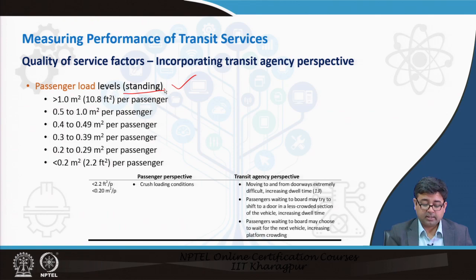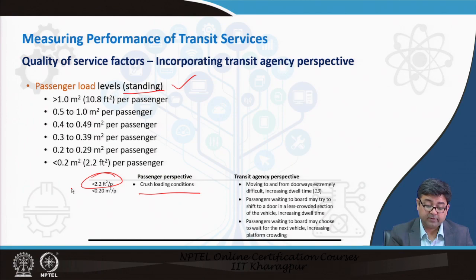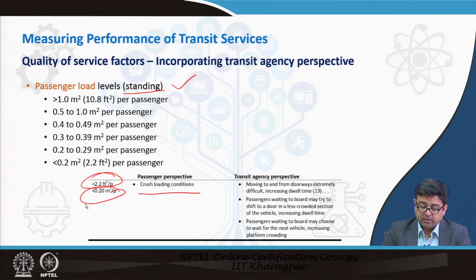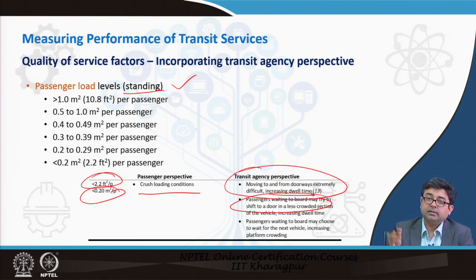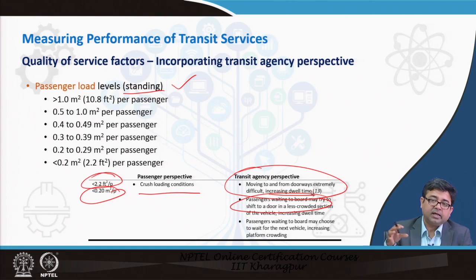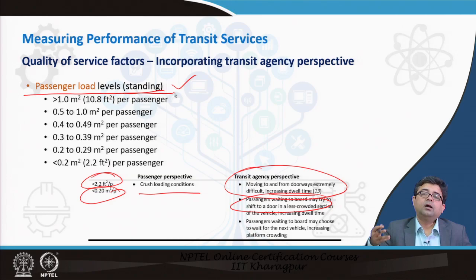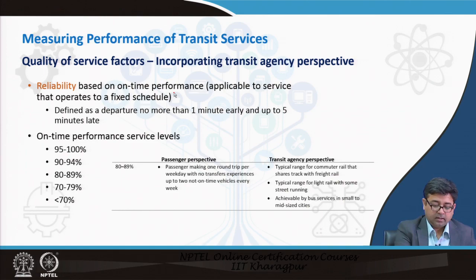Passenger load standing levels also have thresholds that can be developed. During crush loading, there is less than 2.2 square feet per person (less than 0.2 square meters per person) — everybody is crushed against each other with very little standing space. Even for transit agencies this becomes difficult, as moving to and from doorways is extremely difficult, and dwell time — the time buses wait at a stop to pick up passengers — also increases because passengers inside have to shift to let people on and off.